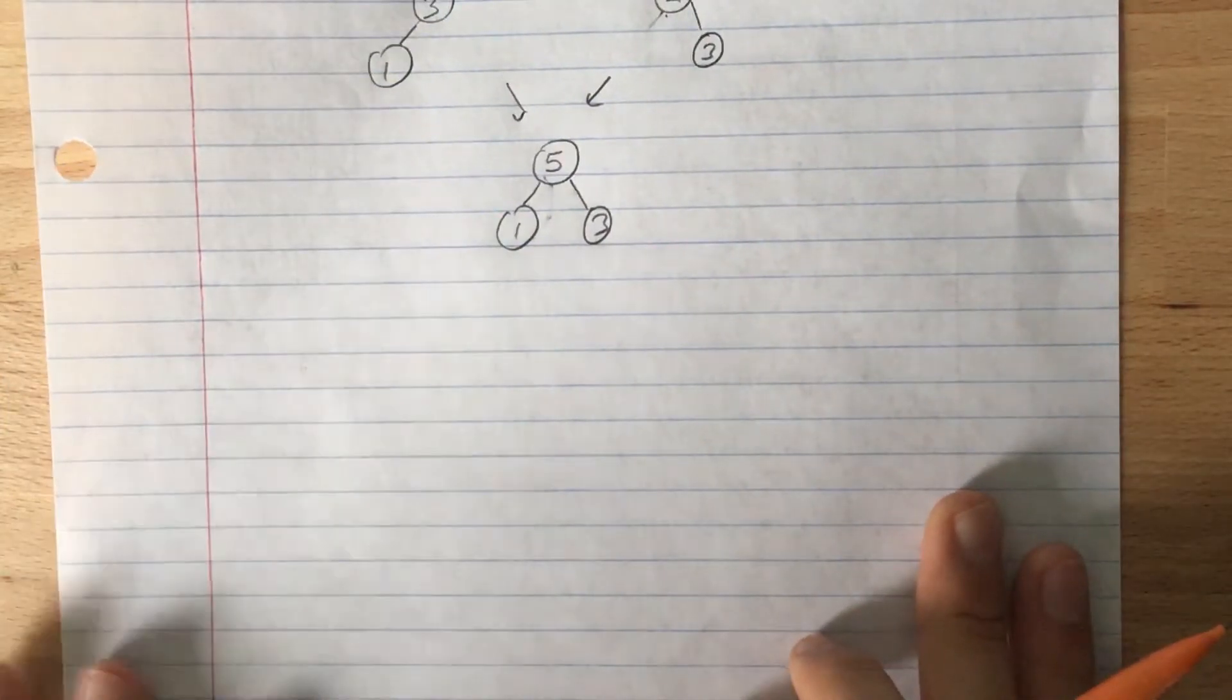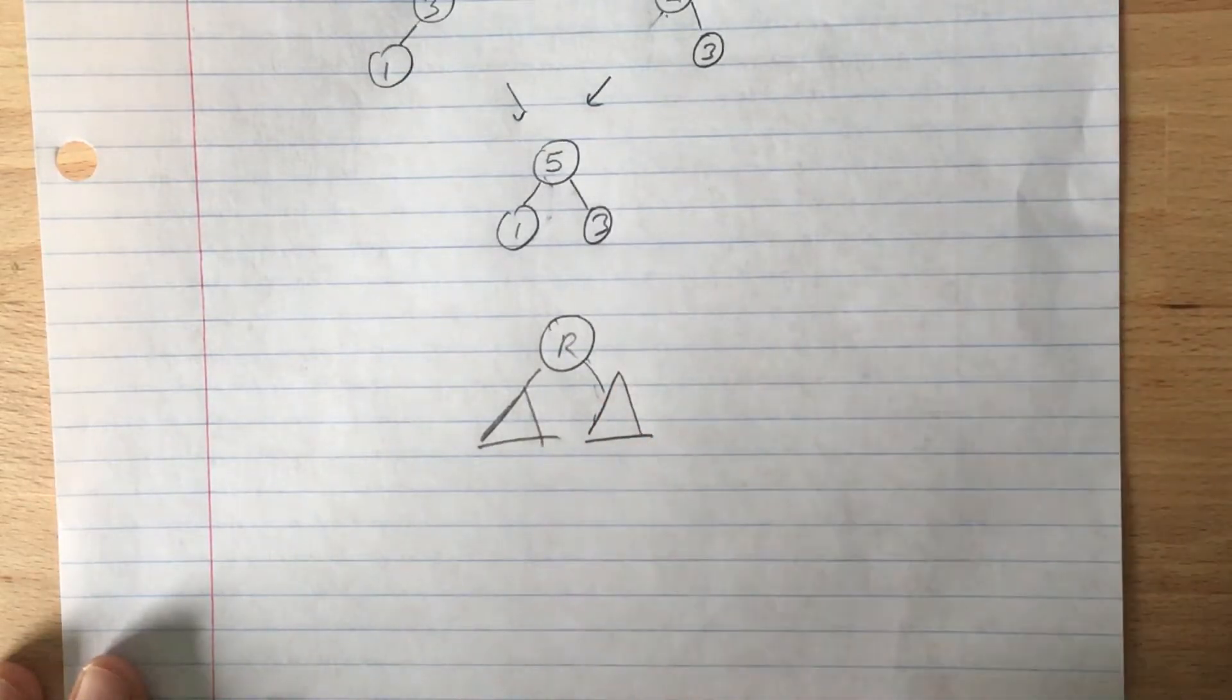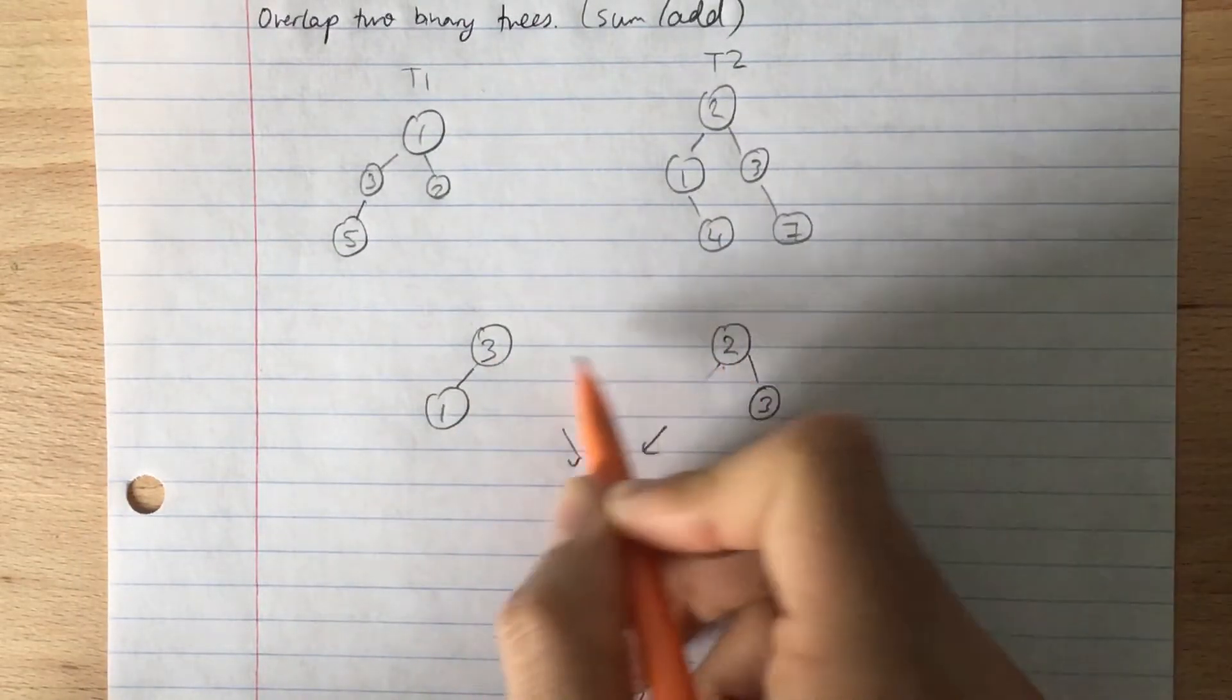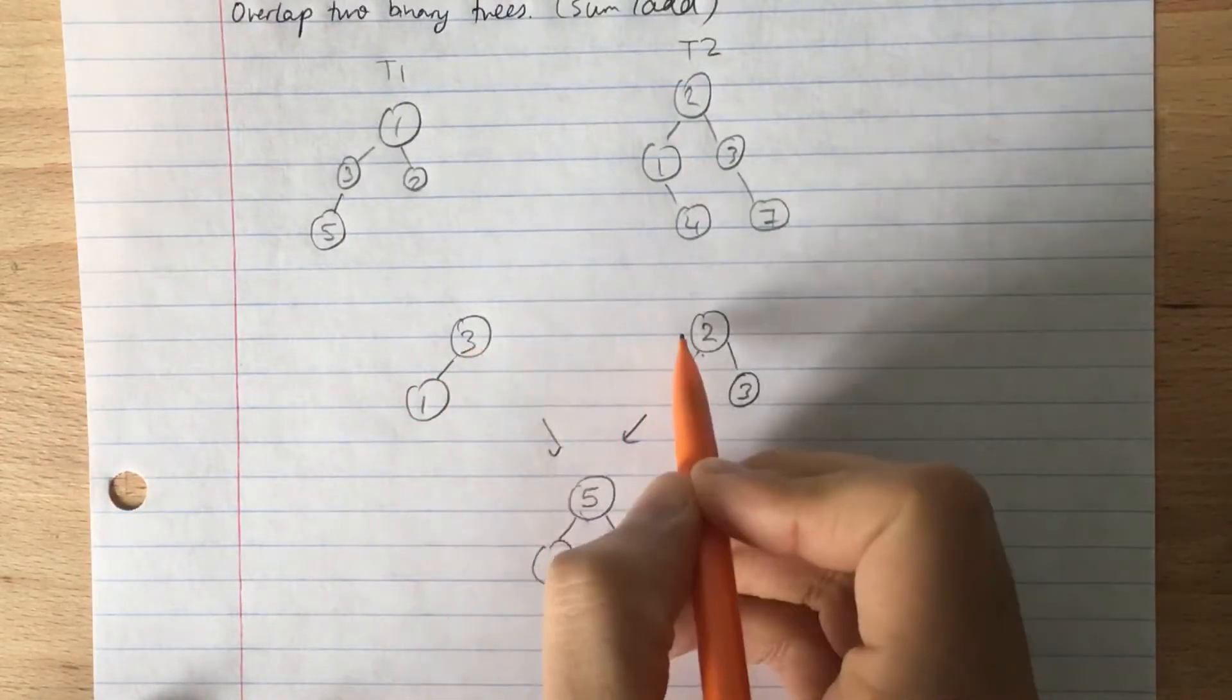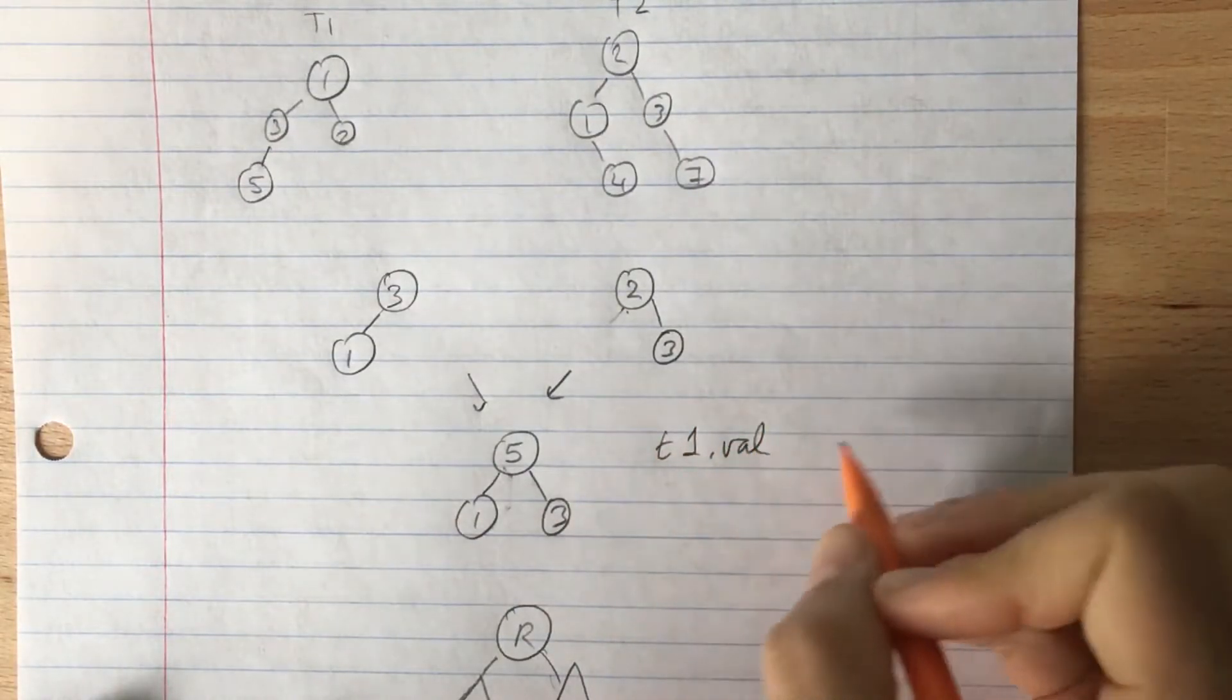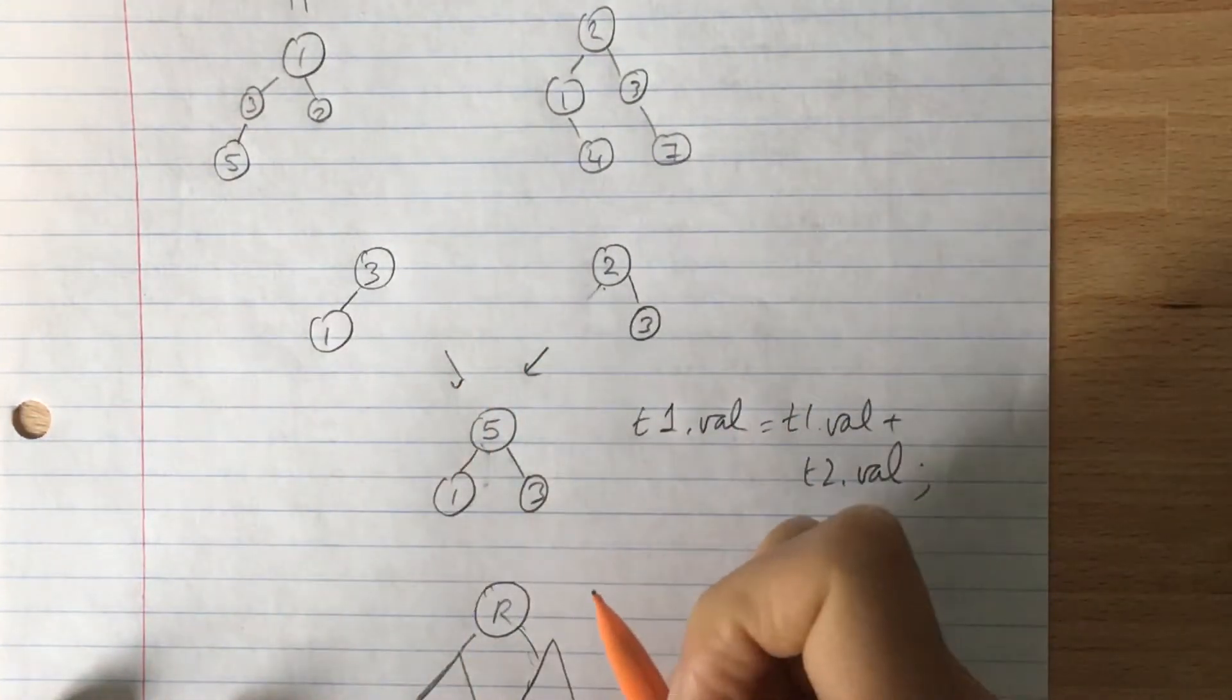Generally, the way to think about trees is that you have a particular root node and then you have a left subchild and then right subchild. So in this particular example here, what we can do is we can think of a really simple scenario. Ultimately, we want to combine and add the result to t1's node and we want to return it. So we will eventually have some statement like t1.val equals t1.val plus t2.val. We eventually want to add those two values together and return it.